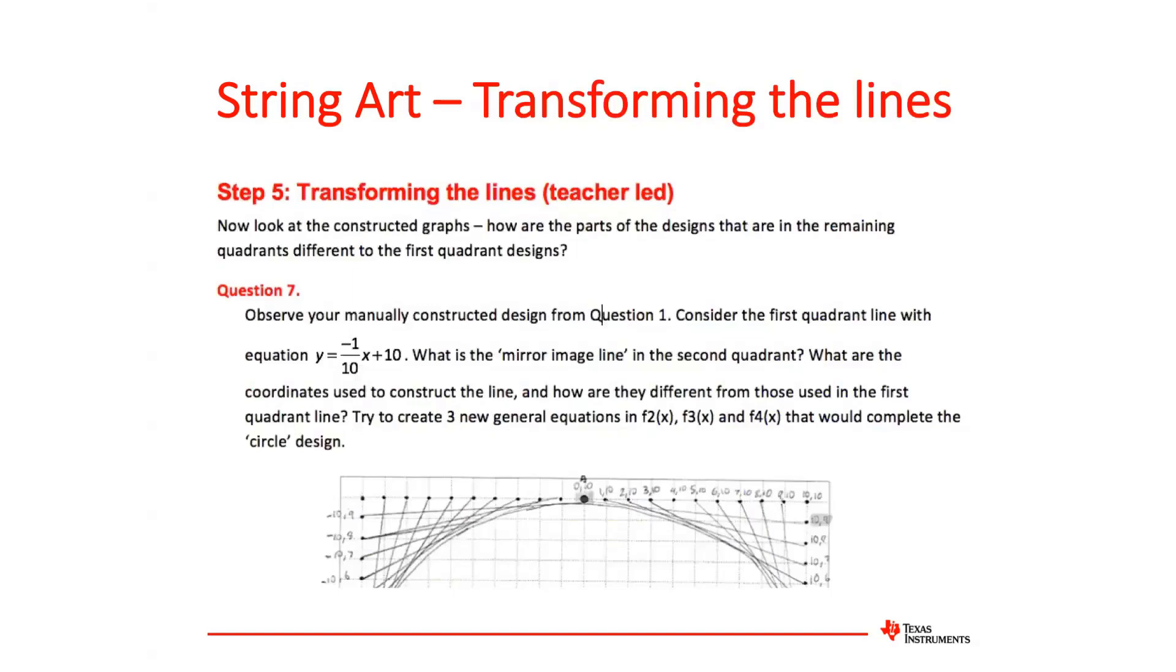It does depend on their experience level with functions. But typically, my Year 10 or Year 11 classes do require leading through the notion that if you're wanting the equivalent set of lines that would be in quadrant two, that it's a transformation of the ones that you did in quadrant one. And in fact, what you're doing is you're just saying, okay, the equivalent points would be... So for example, the point 10, 9 in the second quadrant would be the point minus 10, 9.